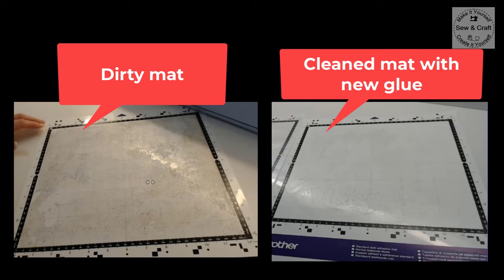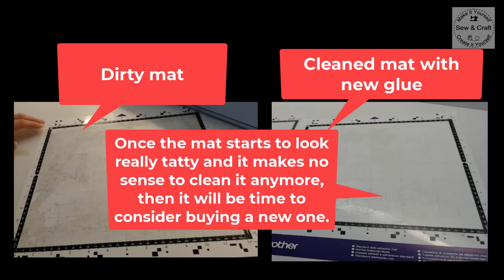Here I have a before picture of the dirty mat and an after picture with the deep cleaned mat with its new glue on it. This mat should last us a good few months but please remember that it is important to do the light cleaning with the baby wipe in between after every five to six cuts to extend the life of that glue. Then when your mat starts looking really chatty and it makes no sense to clean it anymore, then it will be time to consider buying a new one.